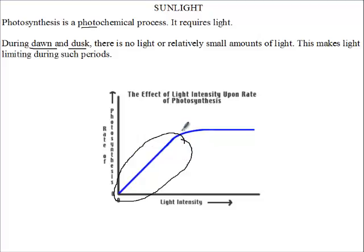To a certain point where the light no longer becomes limiting. To this point, the light becomes enough. Now the rate of photosynthesis will no longer depend on light but will depend on other factors like carbon dioxide concentration.